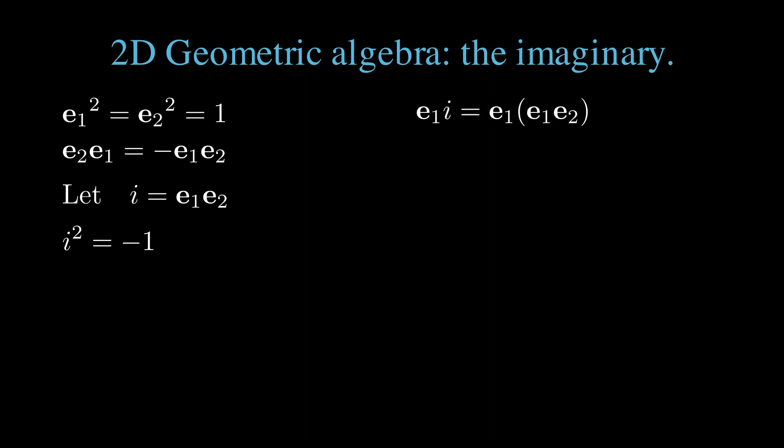Expanding e1 times i, we have an e1 squared product, which is 1, leaving e2.